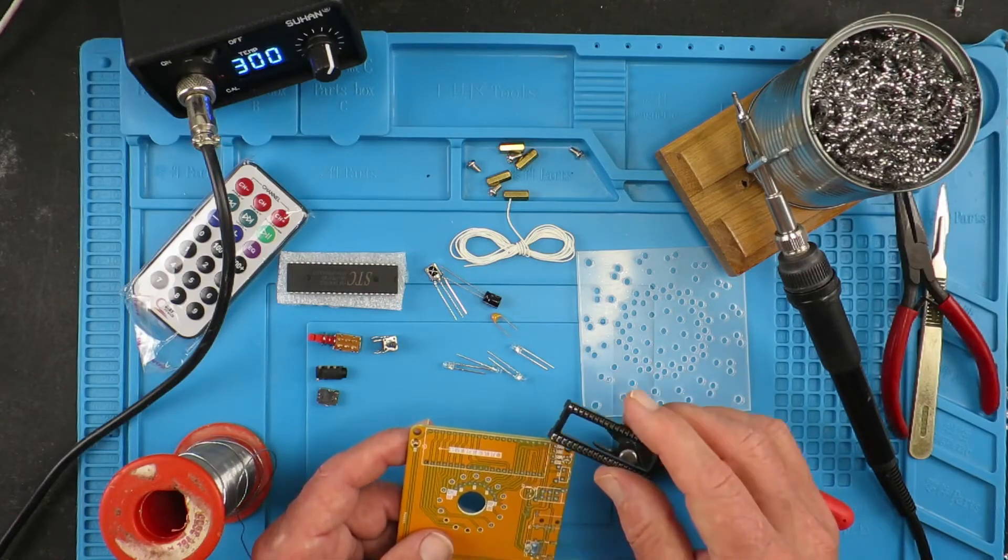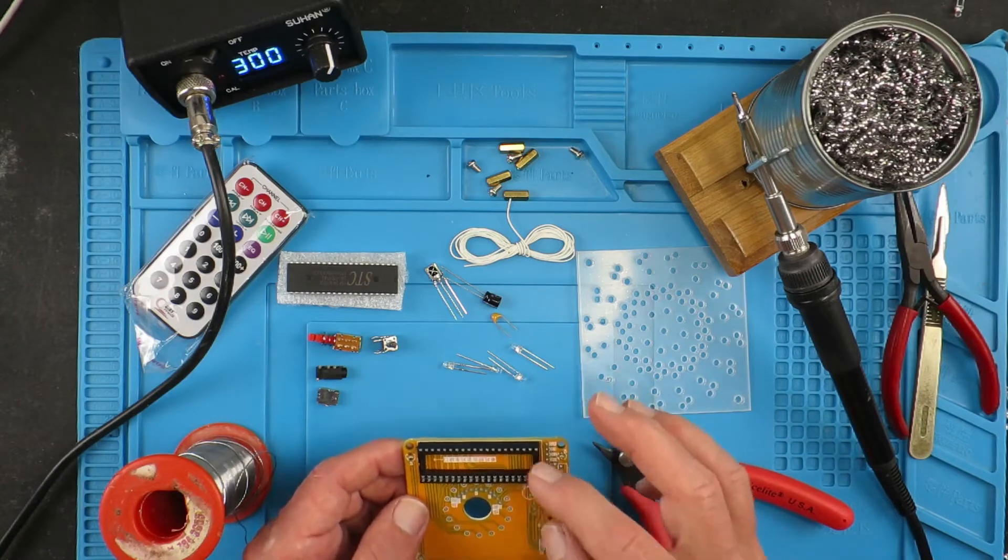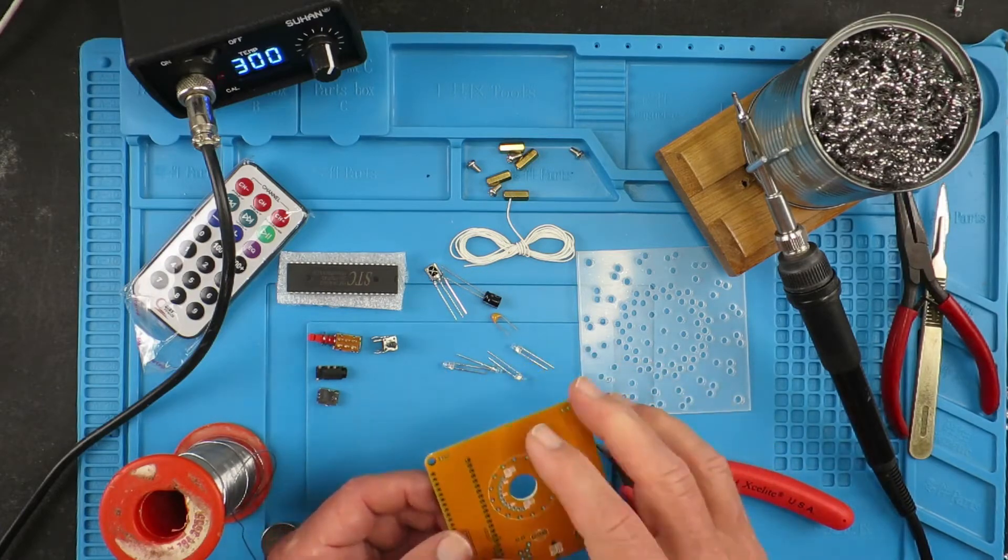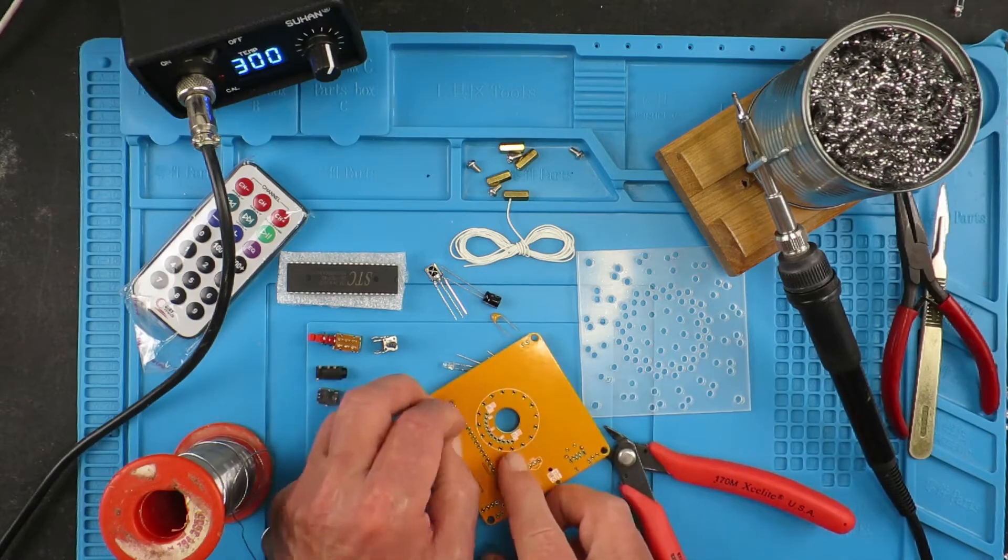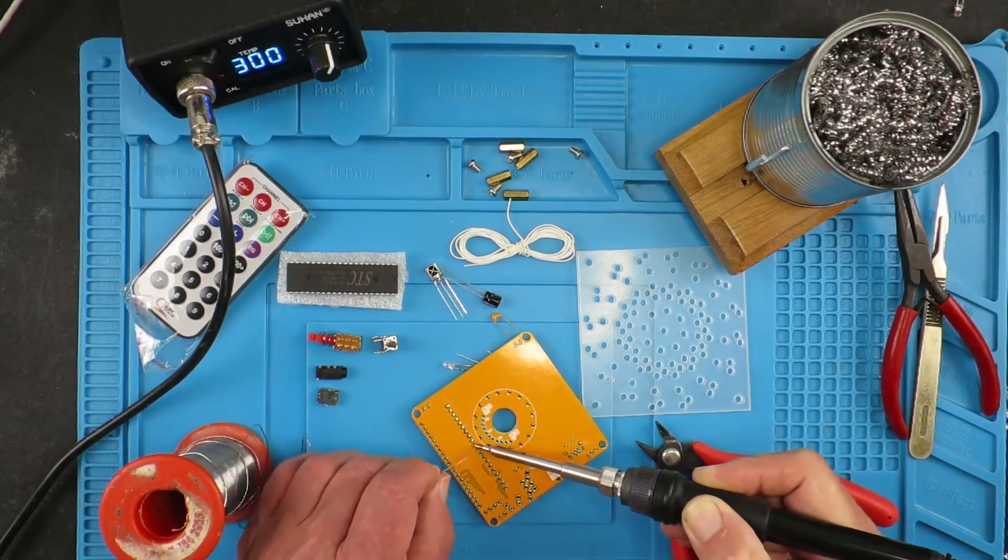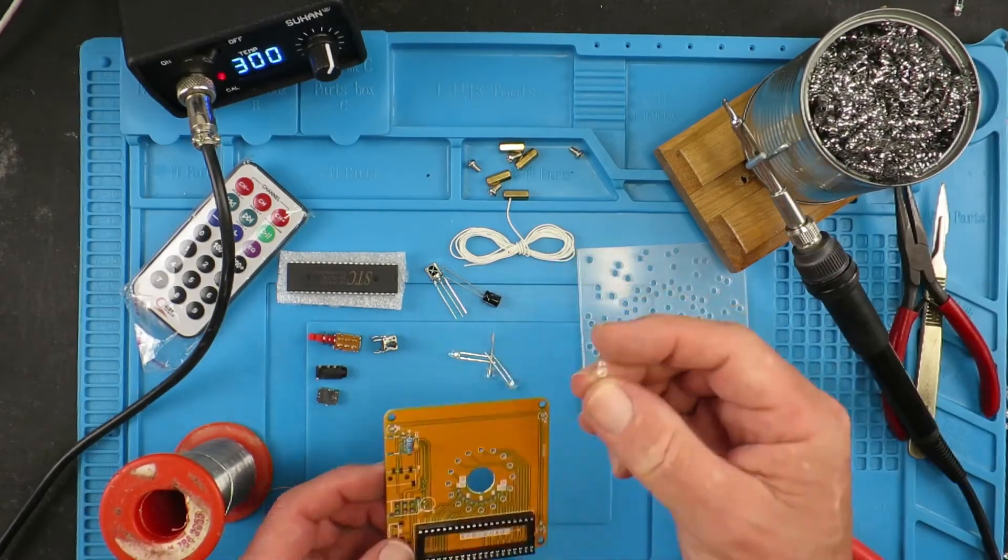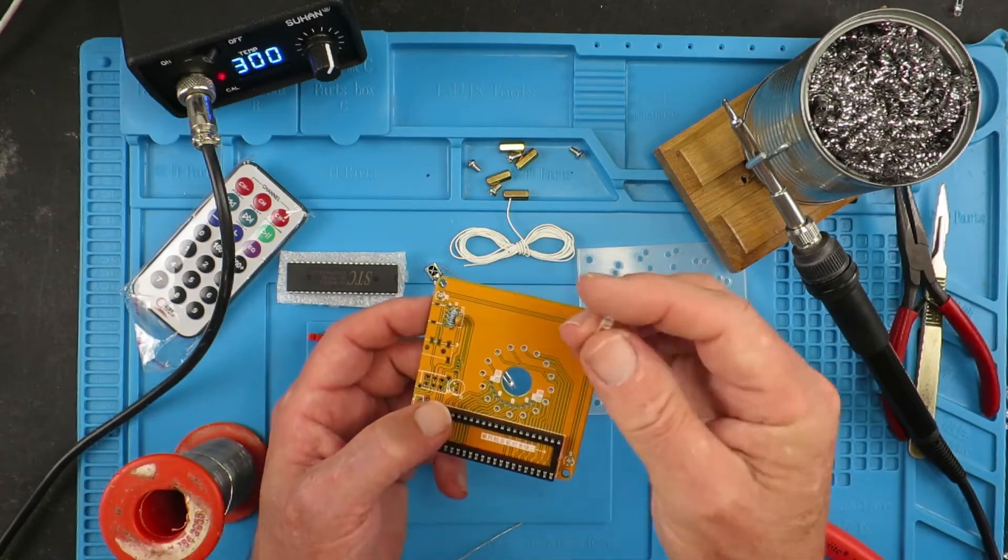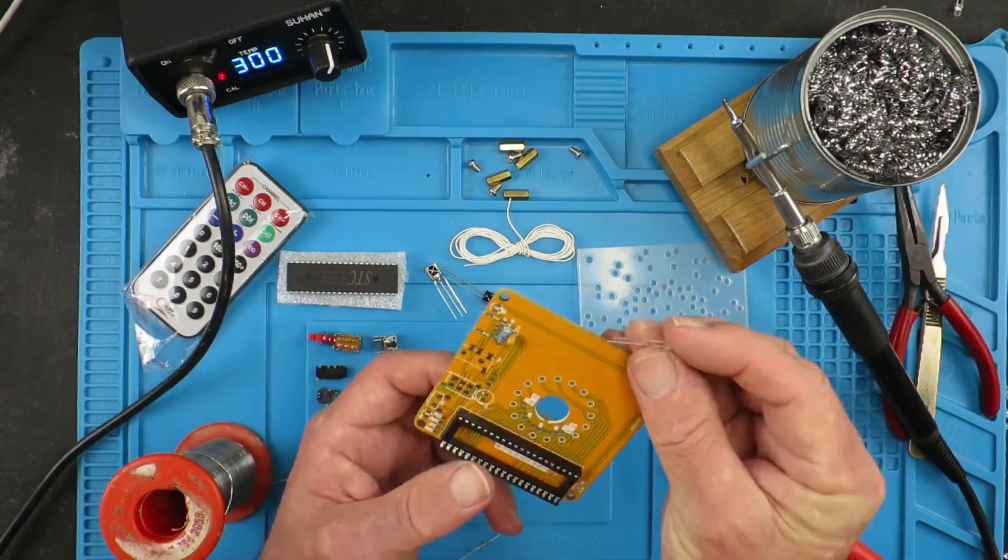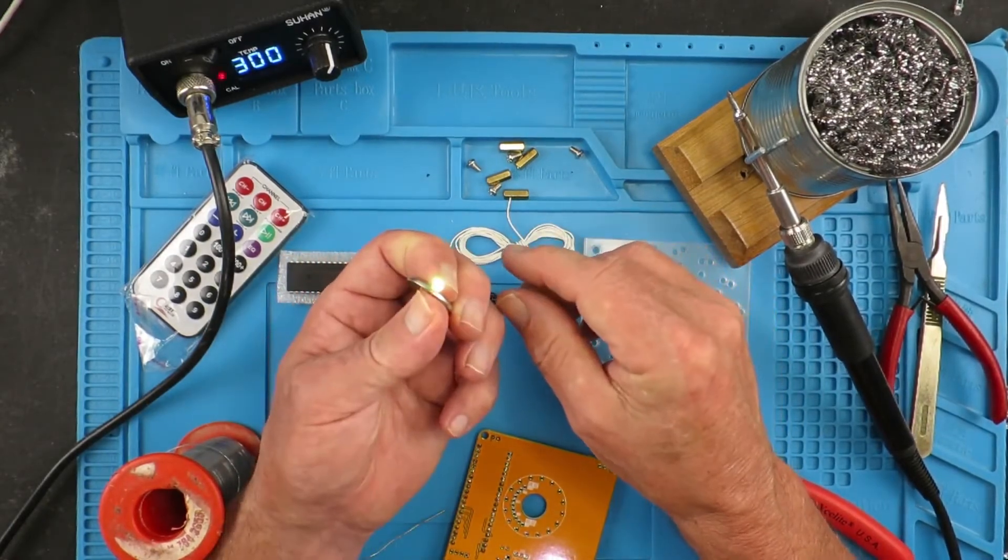Next in terms of profile will be this socket. It clearly has a notch in one end to indicate where pin one should go. I noticed the instructions showed a crystal and some capacitors underneath, but that was a different version. There's four LEDs on the board identified by a flat on one side which is the shorter leg.